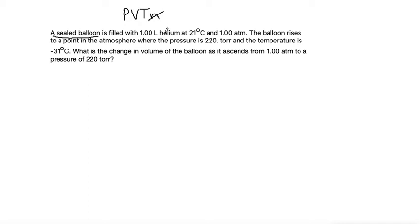It's filled with 1 liter of helium at 21 degrees C and 1 atmosphere. Then it talks about the balloon rising to a different point in the atmosphere. We're going to start with our first condition before the balloon rises. Our pressure P1 will be 1 atmosphere, and volume V1 is 1 liter.